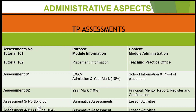For the administrative aspects, the teaching practice assessments are as follows: Tutorial Letter 101 covers module information and all administrative matters. Tutorial Letter 102 covers placement information provided by the teaching practice office. Assessment One is for exam admission and contributes 10% towards your year mark — it consists of school information and proof of placement. Assessment Two also contributes 10% to your year mark and consists of the principal's report, the mentor report, the register, and confirmation of presence in school.